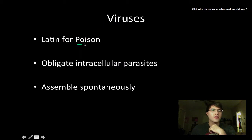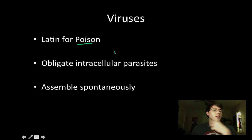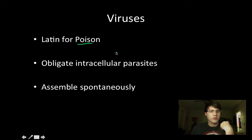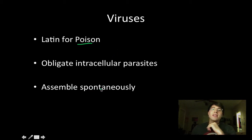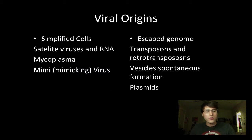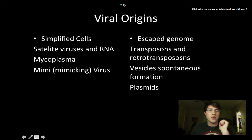Viruses — Latin for poison — are obligated intracellular parasites, meaning they must be inside of cells in order to sustain themselves. They can also assemble spontaneously; they don't need an enzyme to put them together. Their proteins can just do it on their own. There are two origins as to how we got viruses and how they got on this planet.